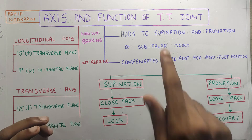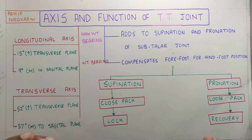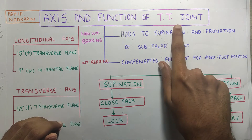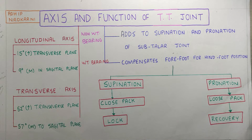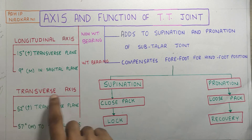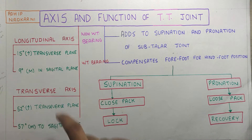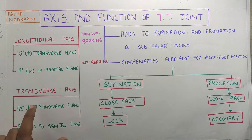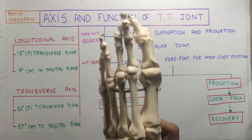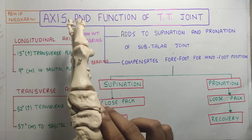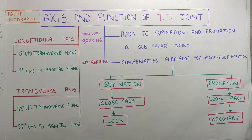Now, the transverse tarsal joint is slightly more complicated than the subtalar joint. It has two axes. The axis of the transverse tarsal joint is divided into two: the longitudinal axis and the transverse axis. In the longitudinal axis, the movement is more of inversion and eversion, whereas in the transverse axis the movement is more of plantar flexion and dorsiflexion — that is upward and downward movement — and also abduction and adduction.